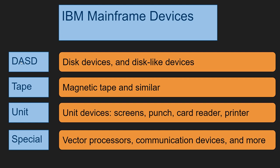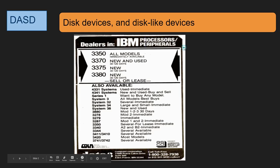Today we're only going to look at the DASD — the Direct Access Storage Device — and all disk and disk-like devices. Some were not disks, but they behaved like disks. Then we'll have one or two more videos on tape devices, and maybe combine unit and special into a third video.